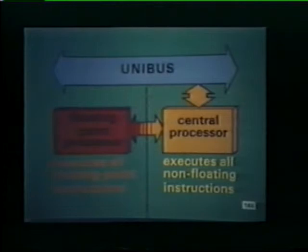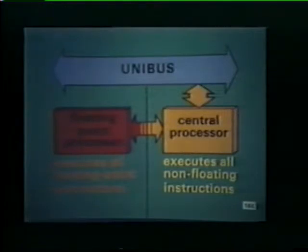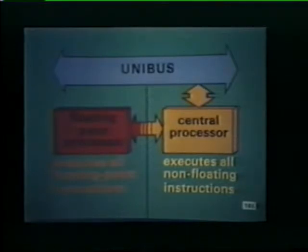Since the FPP is a separate processor, it can operate independently of the central processor. For example, the floating point processor can be executing a floating point add instruction while the CPU is proceeding with non-floating instructions. Interaction between the floating point processor and the central processor is automatically taken care of by the hardware.